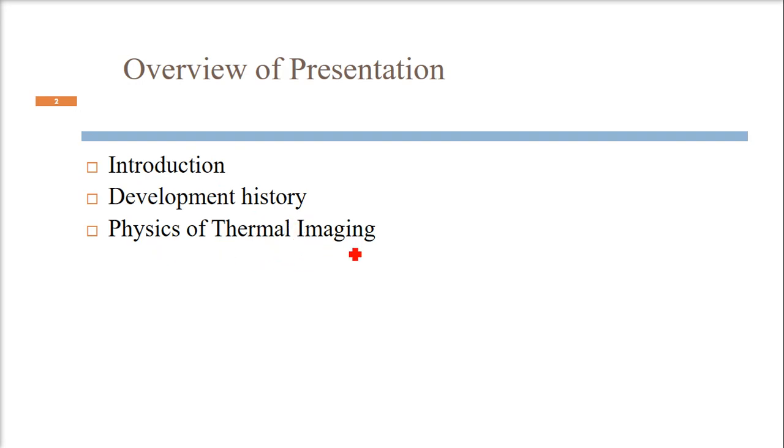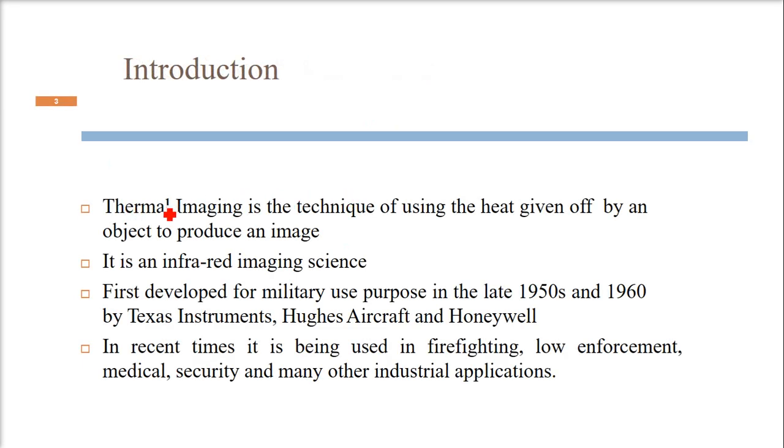First of all, thermal imaging is a technique of using the heat which is given off by an object to produce an image. If there is an object or a human being, heat is emitted or given off by these objects, and this heat will be used to produce an image. Then we call it thermal imaging. It's an infrared imaging science.